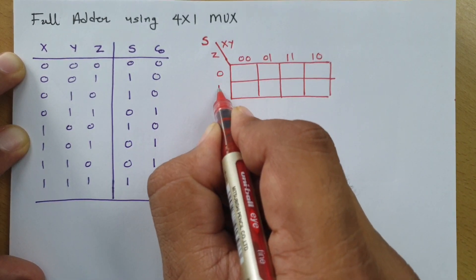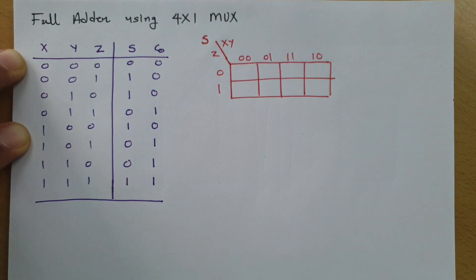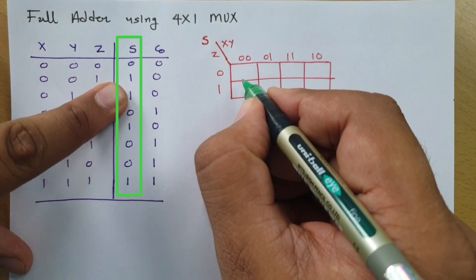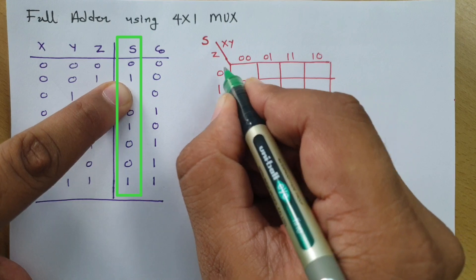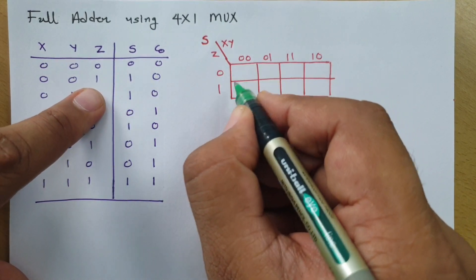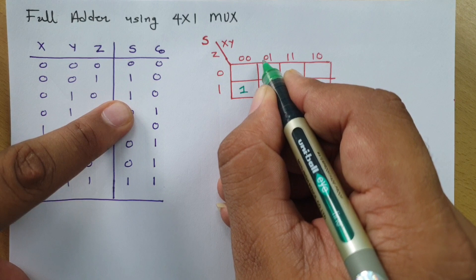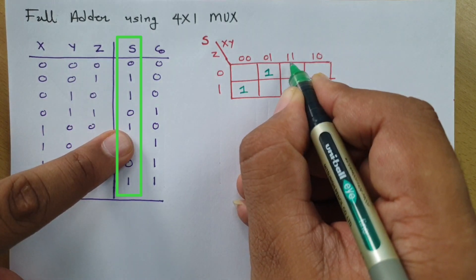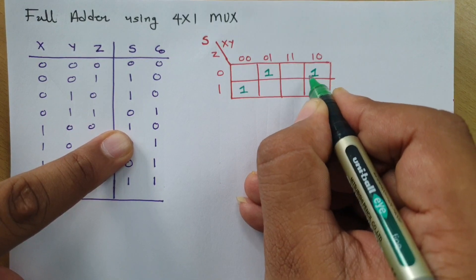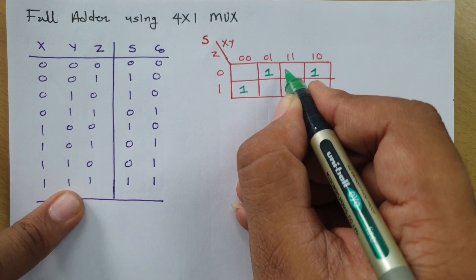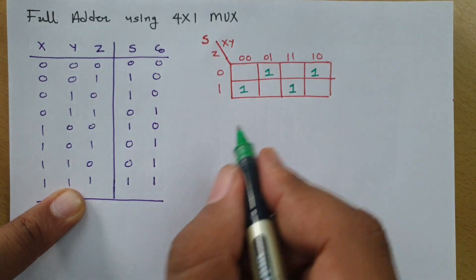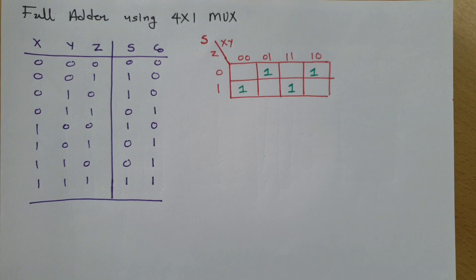With z as 0 and 1, we place the values of 1 in the K-map for sum. Sum equals 1 at positions: (0,0,1), (0,1,0), (1,0,0), and (1,1,1). These are the positions at which sum is 1.